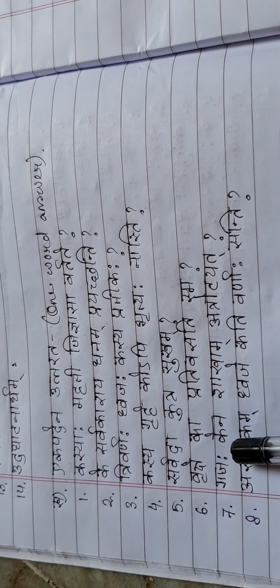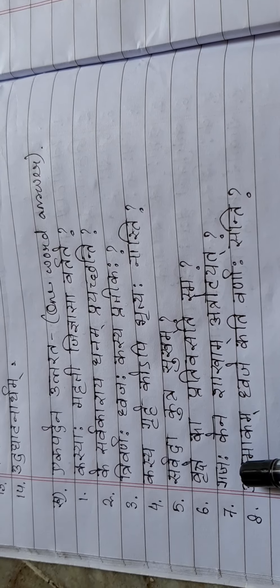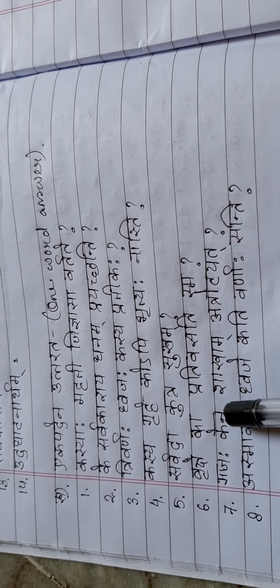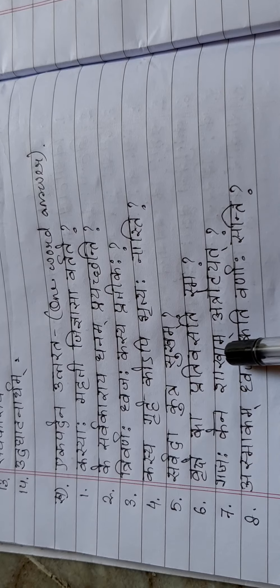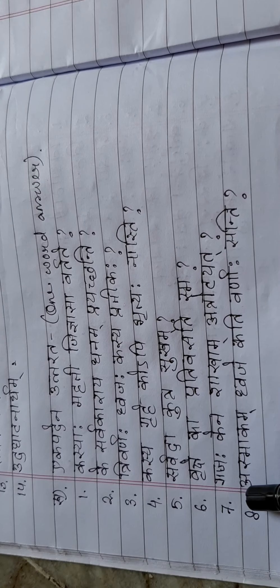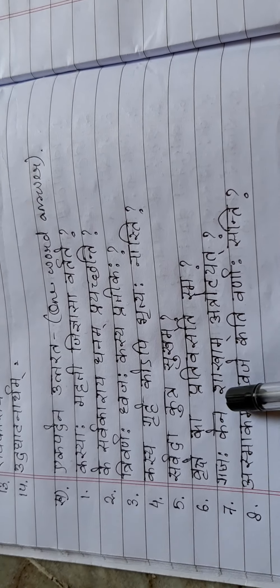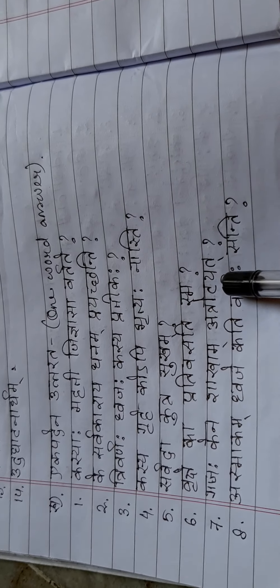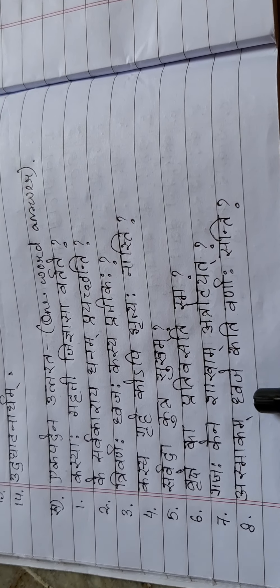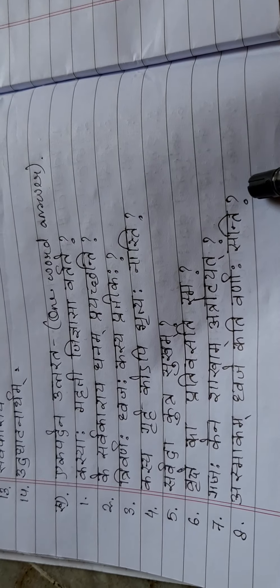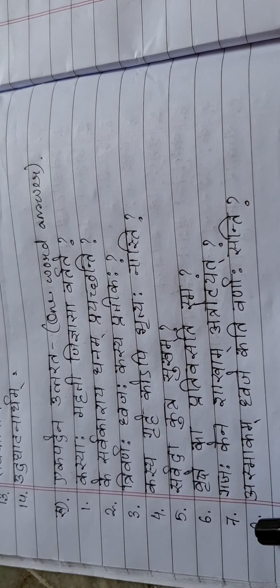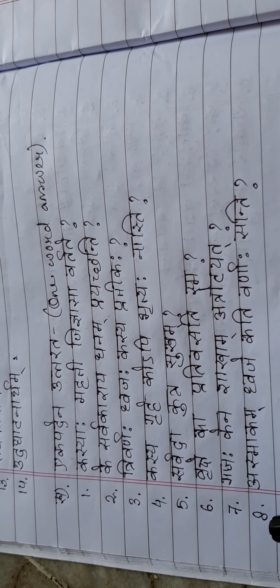Elephant had broken the branches, it is in past tense. Ashmakam Dhvajai Kati Varnaha Santi - In our flag how many colors are there? These are the questions so you have to write the answers in your copy or in a sheet.